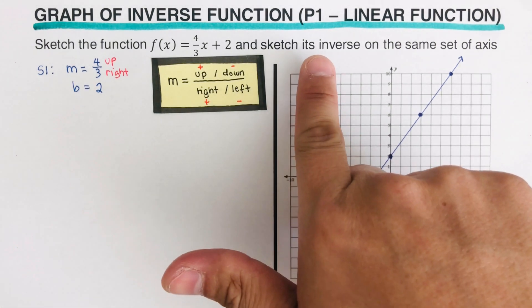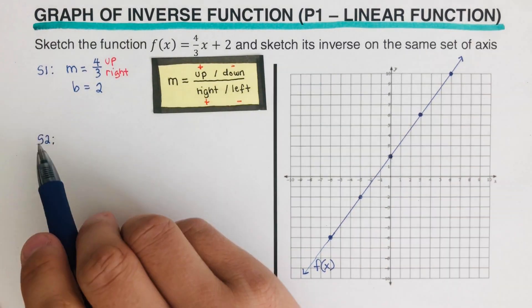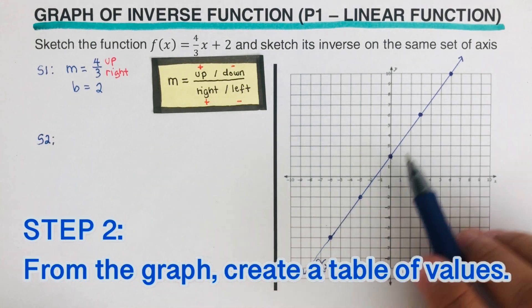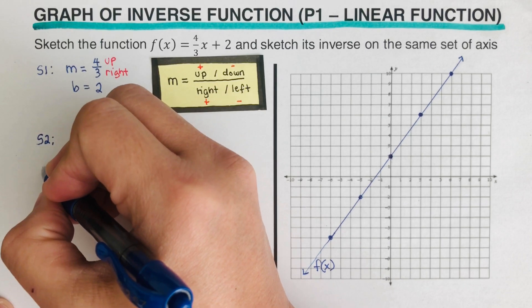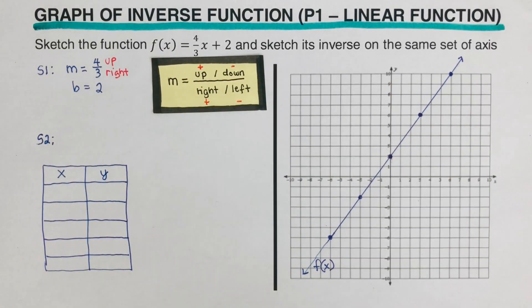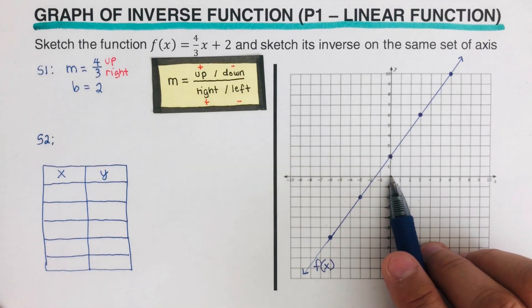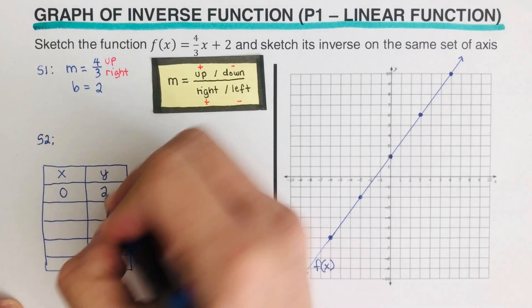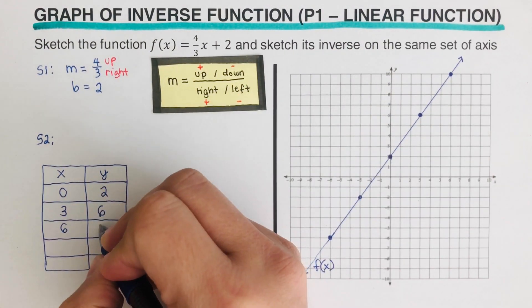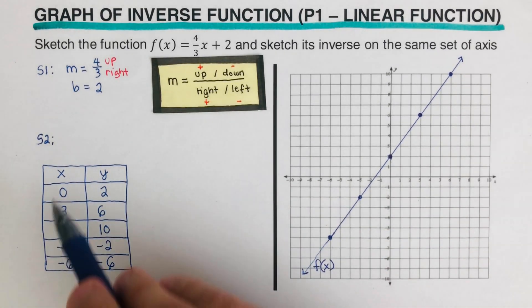Our task is to sketch the inverse on the same set of axes. We move on to step two: from the graph, create a table of values. The points we place in the table are the dots we plotted. Starting with (0, 2), then (3, 6).